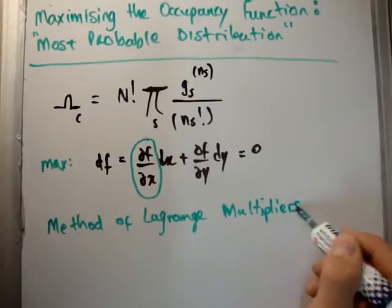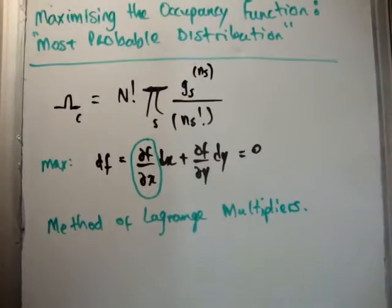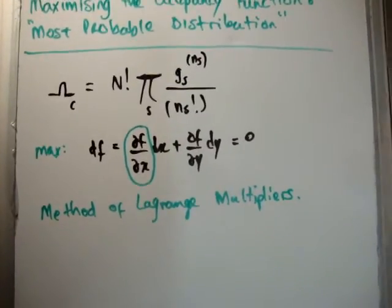And that's going to be my next video, because I'm going to use Lagrange multipliers in order to maximize our occupancy function to come up with the most probable distribution, which we'll call the occupancy function for Maxwell-Boltzmann or Fermi-Dirac or Bose-Einstein.